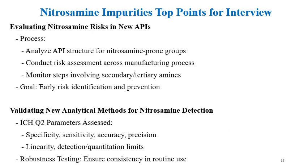When evaluating nitrosamine risk in new APIs, the process involves analyzing the API structure for nitrosamine-prone groups such as amine groups, conducting a risk assessment across the manufacturing process, and monitoring steps involving secondary and tertiary amines. The goal is early risk identification and prevention so that new APIs carry very low nitrosamine risk.